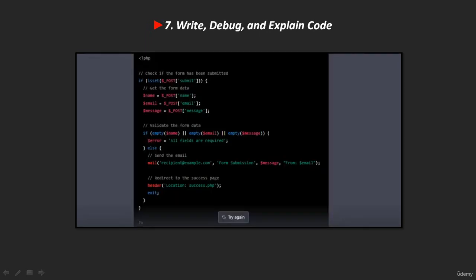Seventh, ChatGPT can write, debug, and explain code. There are bound to be bugs in your code whether you are an experienced programmer or a newbie, and ChatGPT can help you pinpoint your code issues, saving you hours of looking for a misplaced comma. You can also write whole blocks or functional code snippets from scratch, though you might not want ChatGPT code running in production. We also asked it to figure out a JavaScript bug, and here's an example of what it came up with.